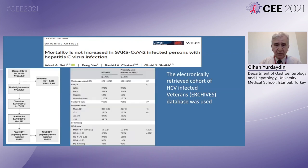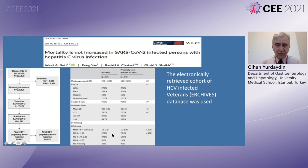The final result was that patients with HCV, when checking the FIB-4 score, have a more severe disease than non-HCV patients, but mortality did not differ between the groups.